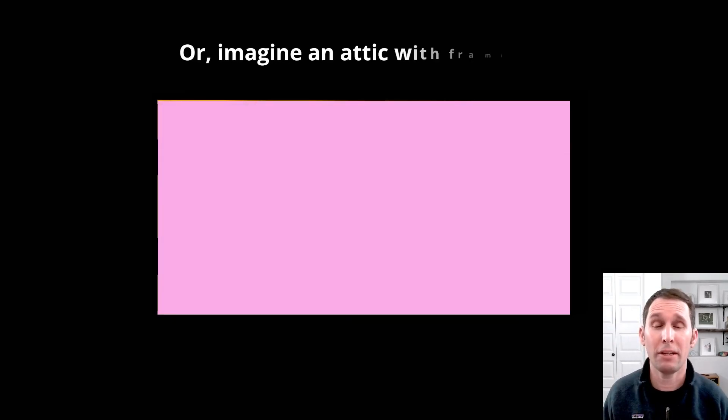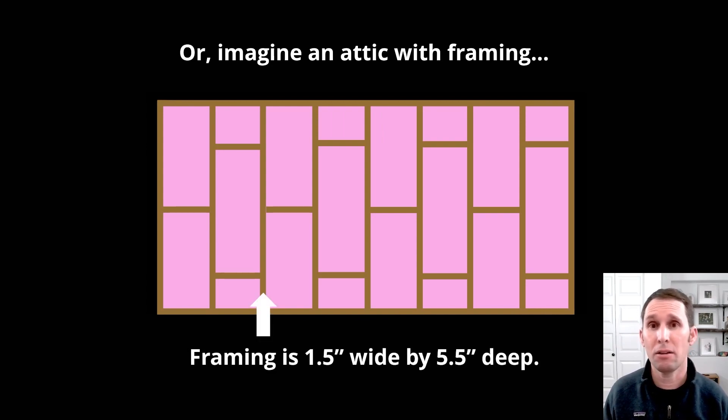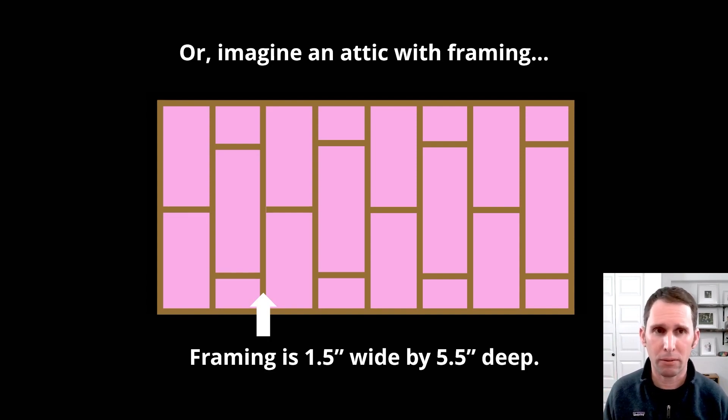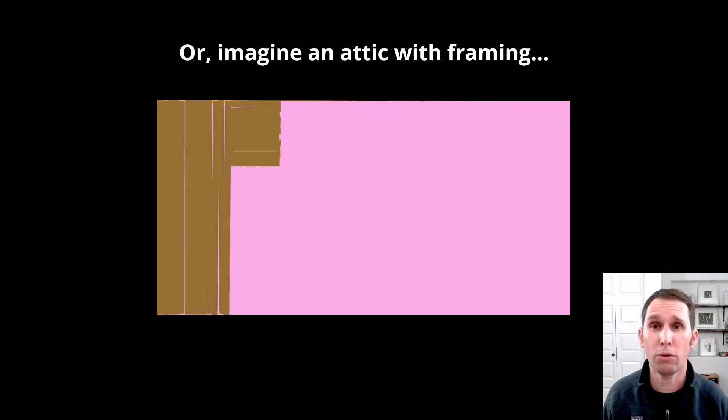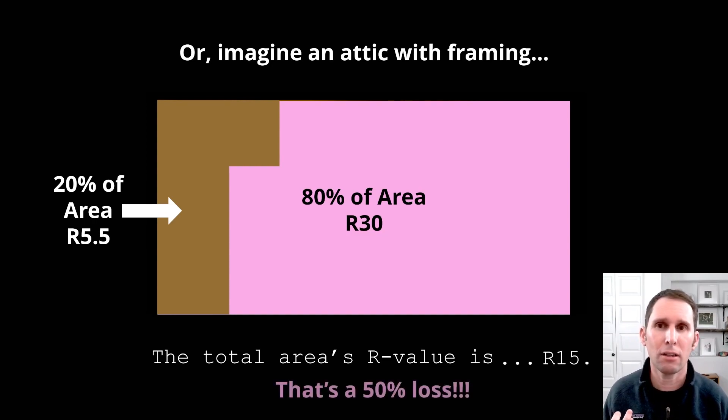So, here's another really common example of when you might lose effectiveness of your attic insulation. Your framing in your attic is 1.5 inches wide by 5.5 inches deep if you had 2x6s on your attic floor. The R value of that would be R1 for wood times 5.5 inches would be about R5.5. And if you add up all those framing components, that may make up 20% of the area. So, now you have 20% of the area of 5.5, 80% of R30 before you even started. That's a 50% loss in insulation. So, it's not just important how much insulation you have. It's very important how well it is installed.